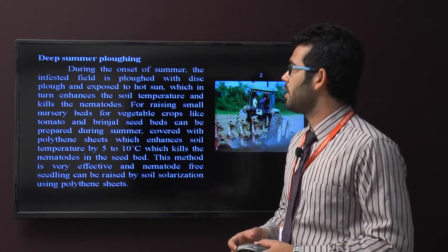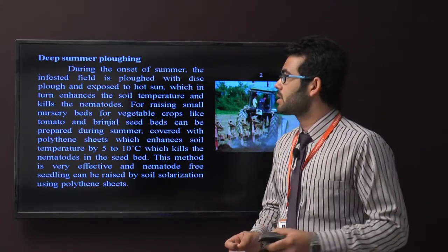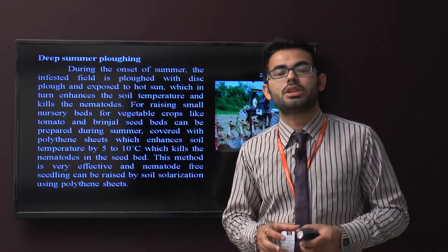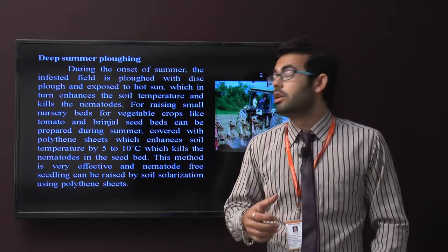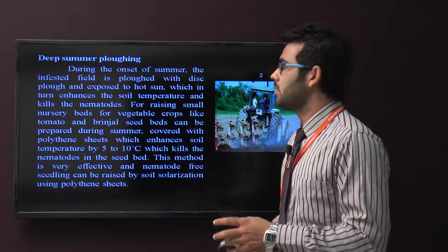Next is deep summer plowing. During the onset of summer, infested fields are plowed with disk plows as exposed to hot sun which in turn enhances the soil temperature. Increased soil temperature kills the nematodes.